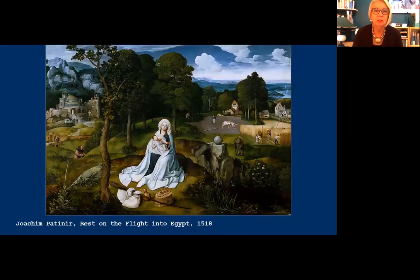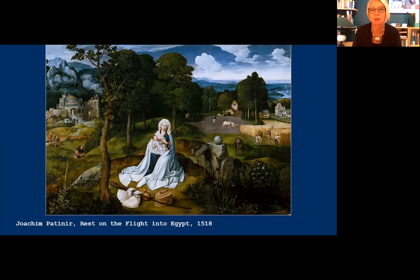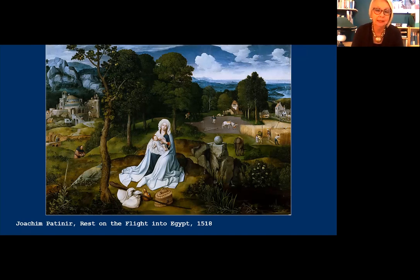Moving north, here's another version from almost the same time by Joachim Patnir — the first Flemish artist to actually regard himself primarily as a landscape painter. He invented the panoramic world landscape that became popular in Northern Renaissance art: an imaginary landscape with a high vantage point showing mountains, lowlands, buildings, and so forth — the sort of thing we see in Bruegel. Despite not depicting an actual place, we're now looking at a landscape that has a story going on in it, rather than a story with a landscape behind it.